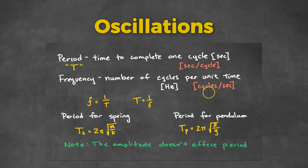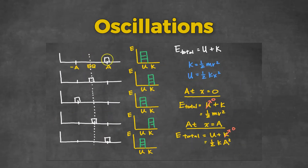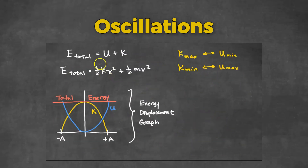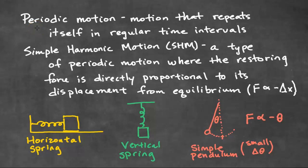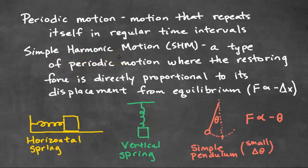In this video, we're going to review oscillations for AP Physics 1. We're going to start with periodic motion — these are motions that repeat themselves in regular time intervals. Simple harmonic motion is a special type of periodic motion where the restoring force is directly proportional to its displacement from the equilibrium.